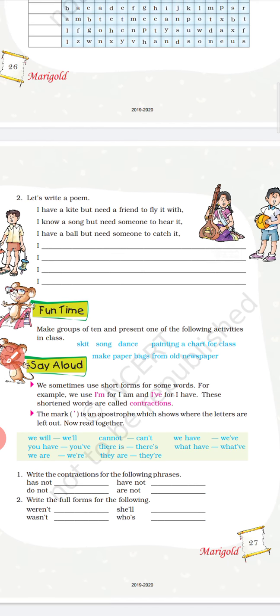Now you can see that in this question it says 'Let's write a poem.' This is a part of creative writing. Creative writing rachnatmak lekhan hoti hai. So creative writing ka yeh ek part hai. Let's start writing: 'I have a kite but need a friend to fly it with.'